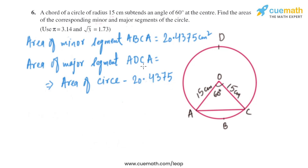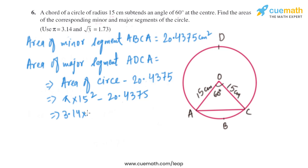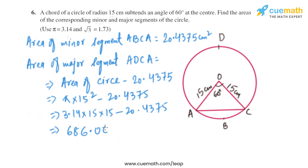The area of the major segment ADCA equals the area of the circle minus the area of the minor segment ABCA. The area of the circle is π × r² = 3.14 × 15² = 706.5 square centimeters. So 706.5 minus 20.4375 gives us the area of the major segment ADCA as 686.0625 square centimeters.